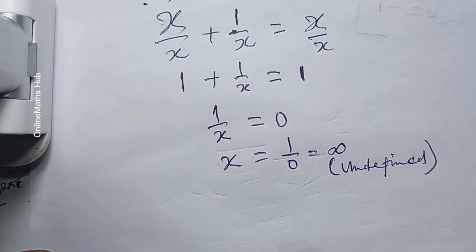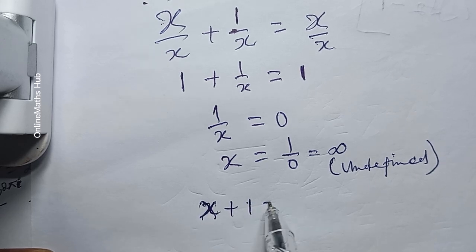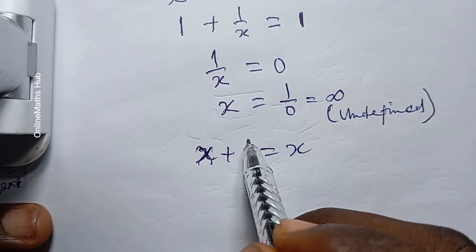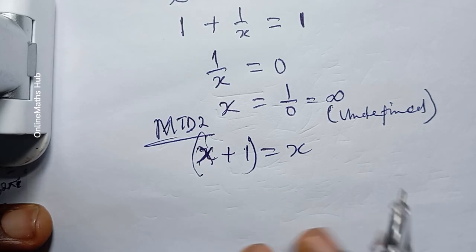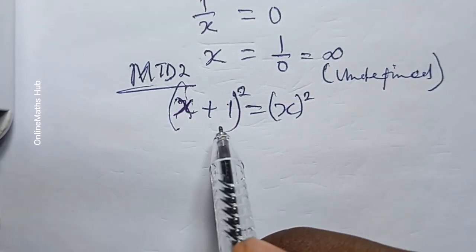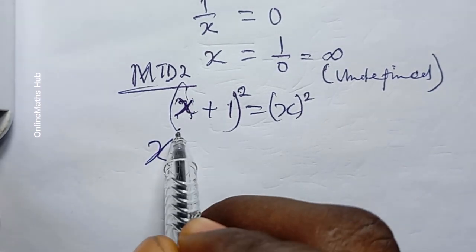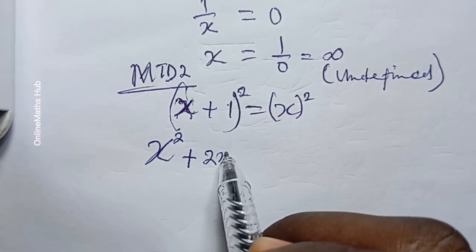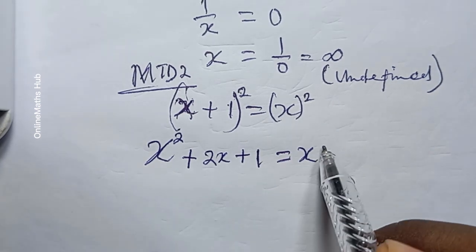Another cool method to solve this — let's call it Method 2 — is to take the square of both sides and open the bracket. You're going to have x squared plus 2x plus 1 equal to x squared.